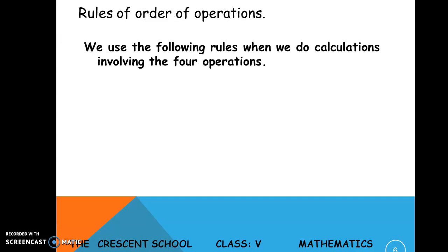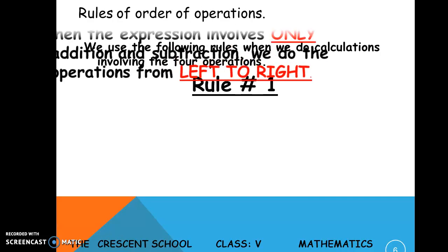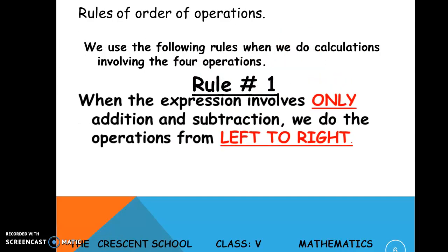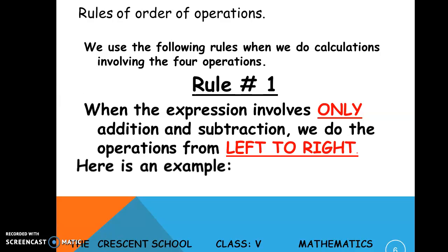These are the rules of order of operations — the rules we use when doing calculations involving the four operations. Rule number one: when the expression involves only addition and subtraction, we do the operations from left to right.